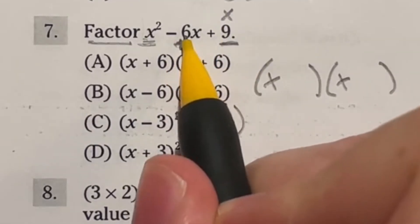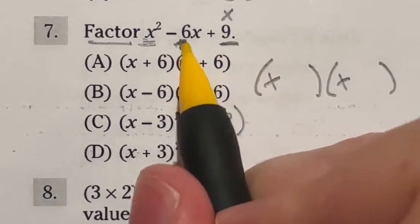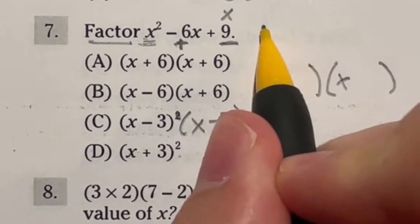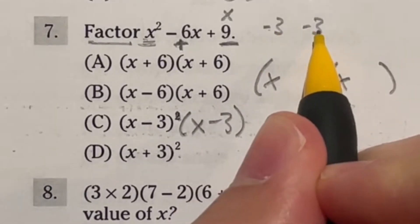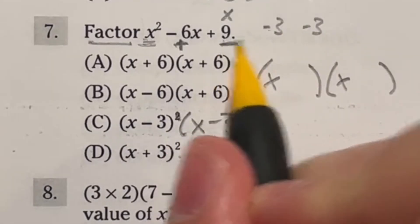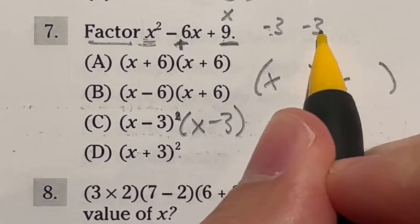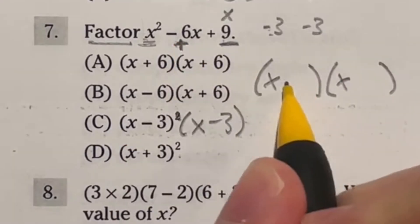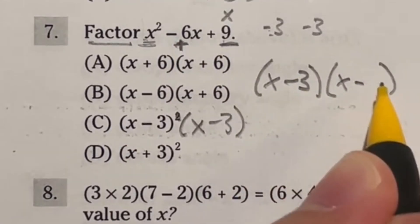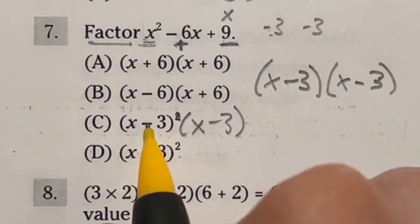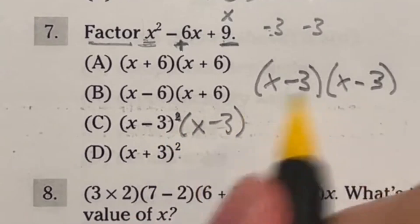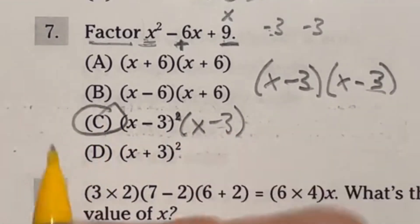We need to multiply to the 9, add to the negative 6. So what numbers multiply to 9 but add to negative 6? Well if you look at negative 3 and negative 3, negative 3 times negative 3 would give you a positive 9, whereas negative 3 plus negative 3 would give you a negative 6. So that's going to be our answer, x minus 3, x minus 3. That x minus 3 squared is just that. So our answer here is going to be C.